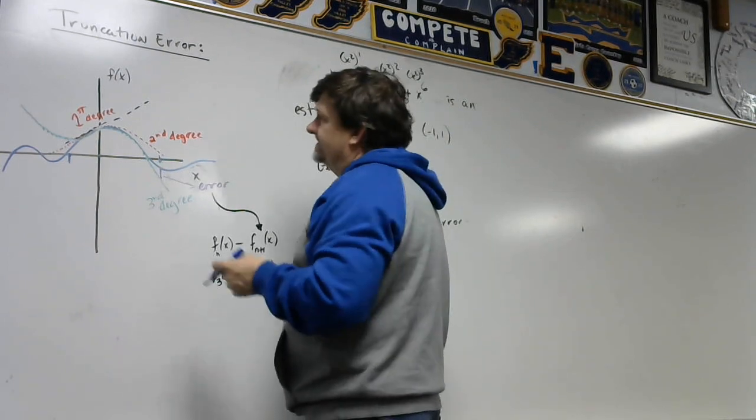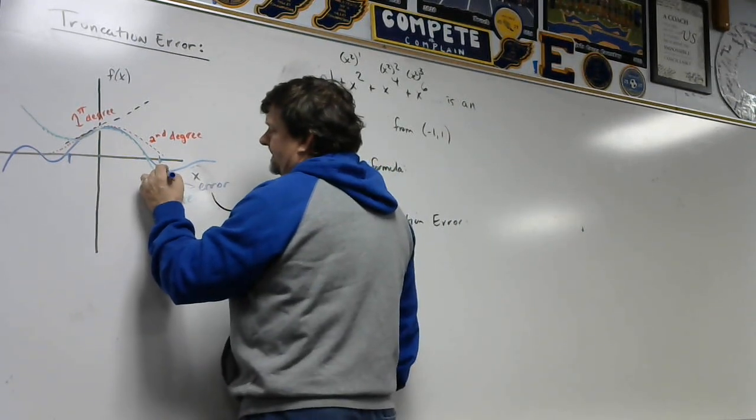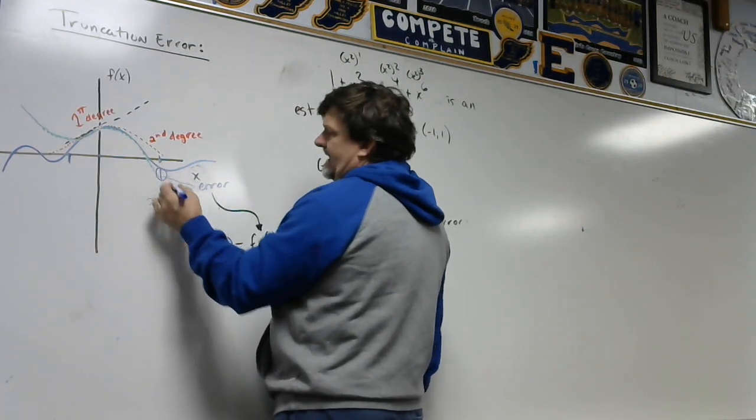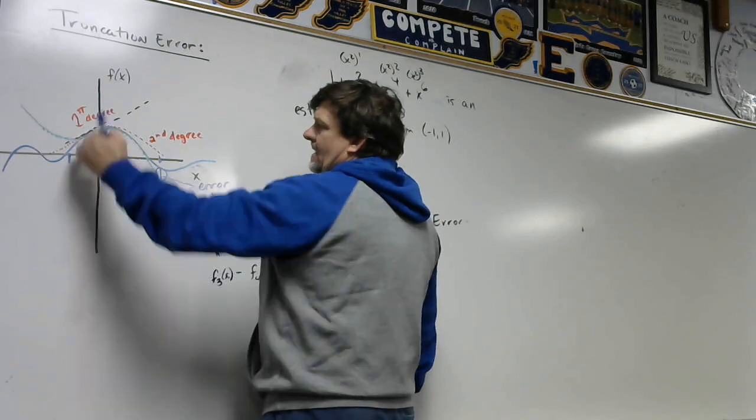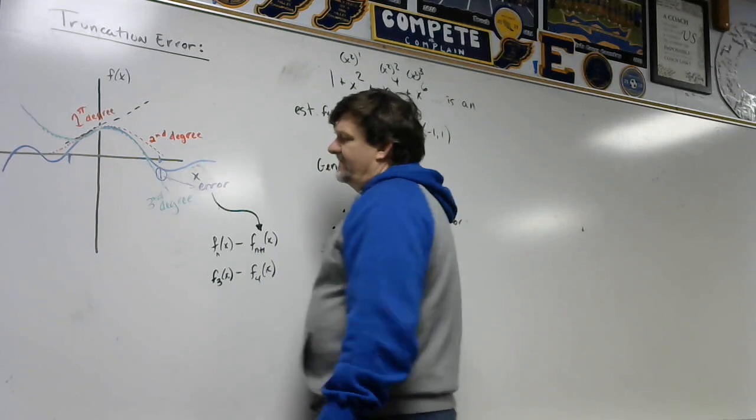Lagrange errors. What we're talking about is what's the error right here. So this little purple line I have is the error of the third degree polynomial based on the original f(x).